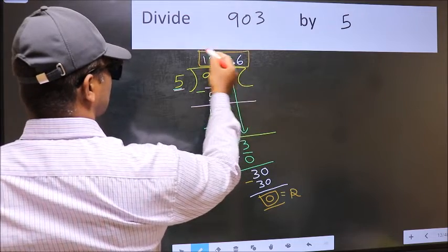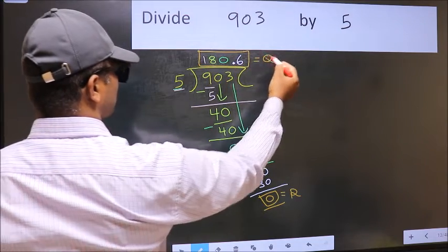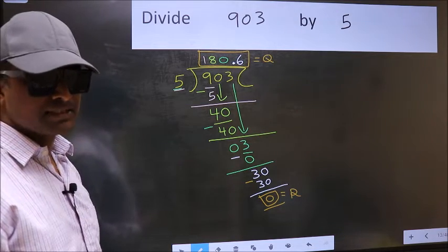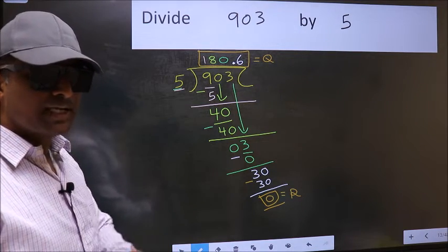So this is our remainder, and this is our quotient. Did you understand where the mistake happens? You should not do that mistake.